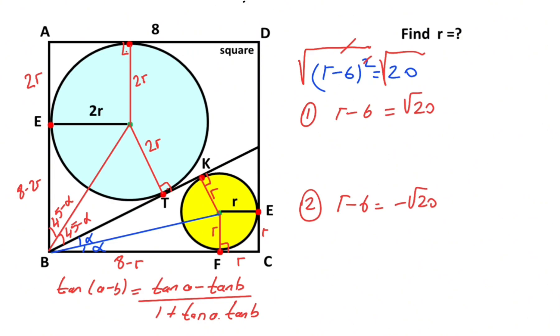In the first scenario, r equals 6 plus root 20. But notice that one side of the square is given as eight. That means the radius must be less than eight, so we cancel out. In the second scenario, r equals 6 minus root 20, so 6 minus 2 root 5.